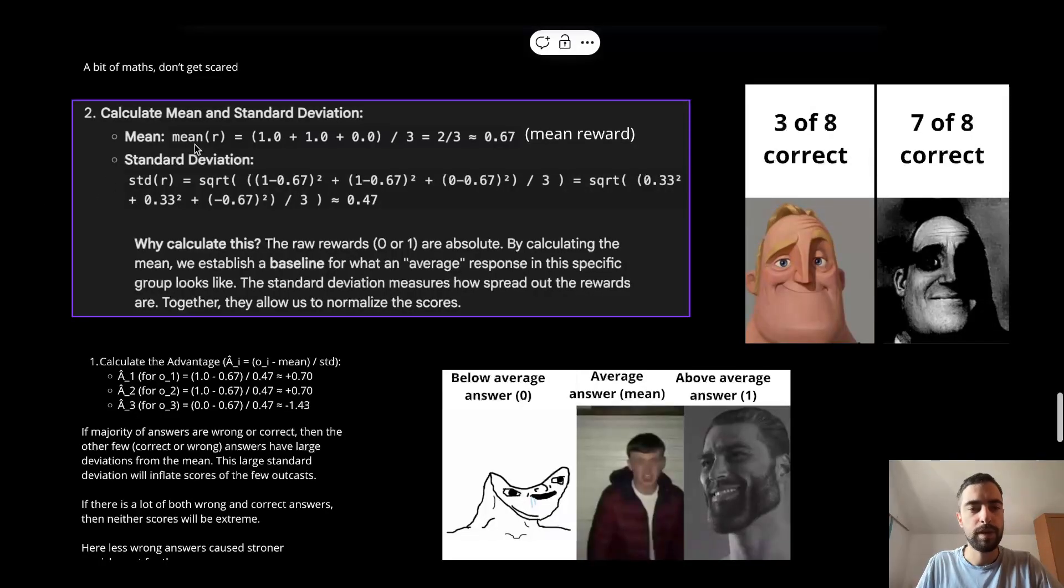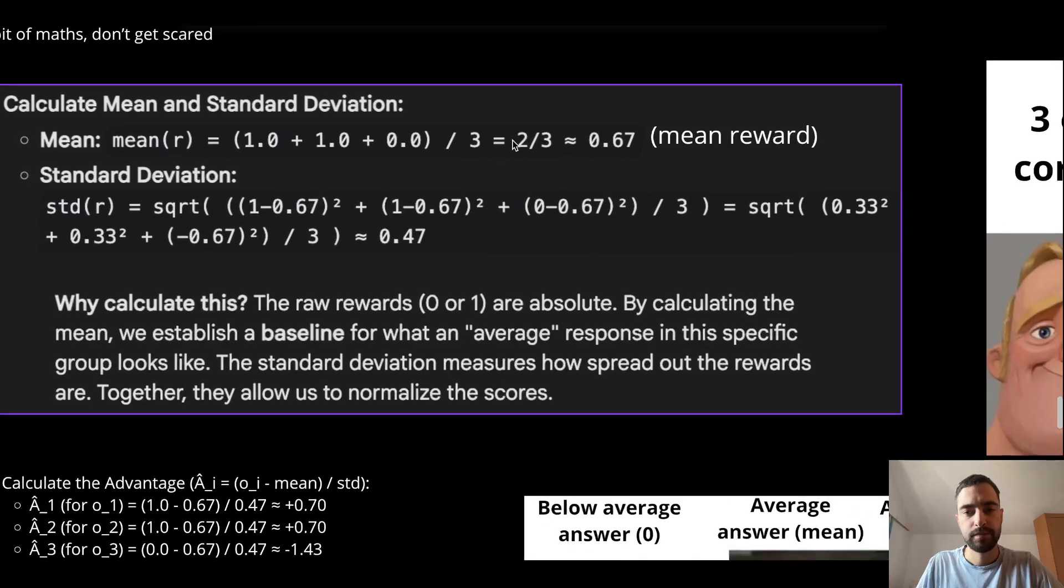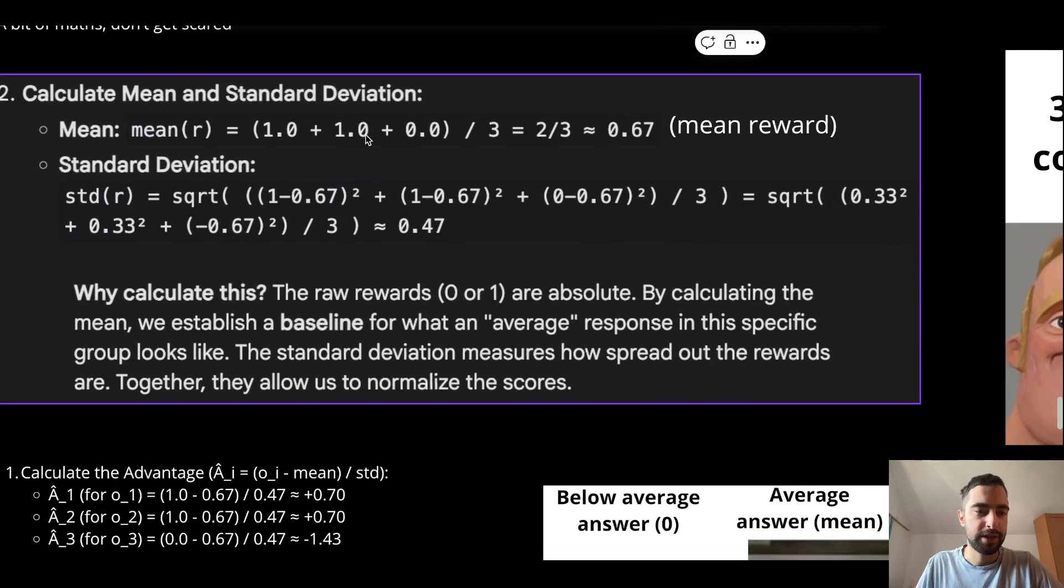So first we will calculate the mean reward. And as you can see, we just add all of these and divide by the number of answers. So if there is more correct answers, this mean will be closer to one and vice versa.